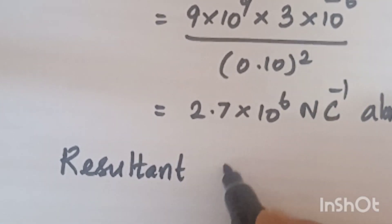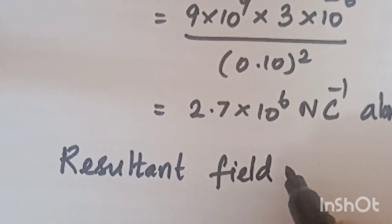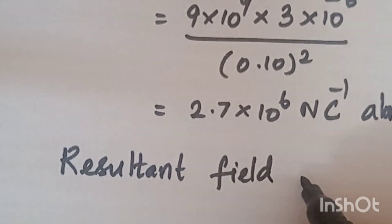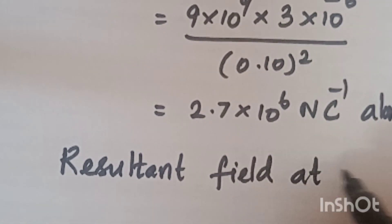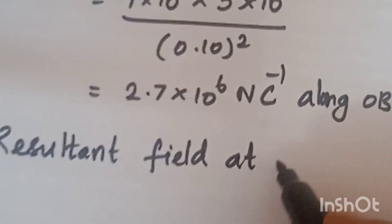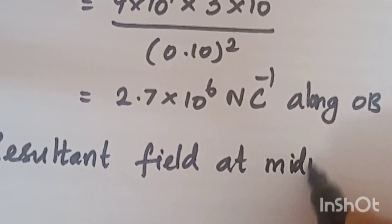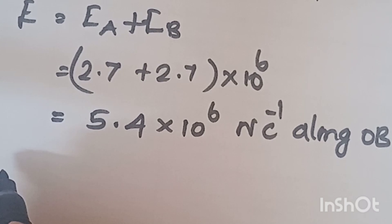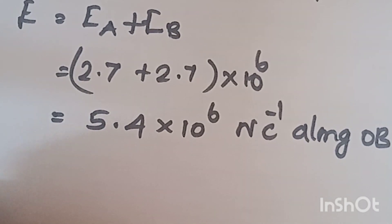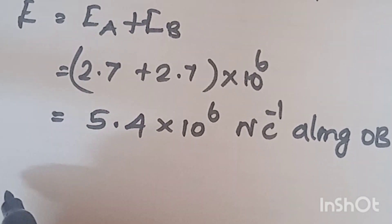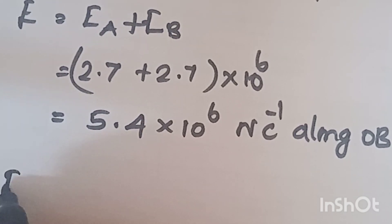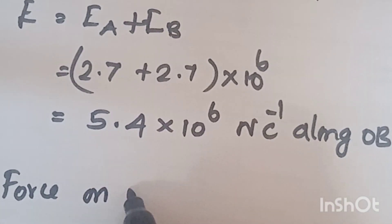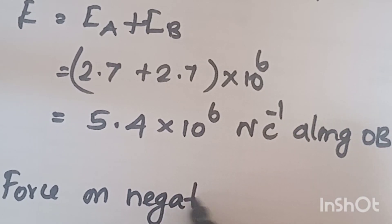The field due to QA at O is also 2.7 into 10 power 6 newton per coulomb in direction O to B. The resultant field at midpoint O is EA plus EB equal to 2.7 plus 2.7 into 10 power 6, which is 5.4 into 10 power 6 newton per coulomb, in the direction O to B.